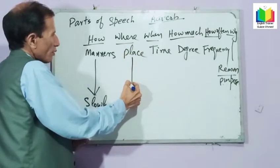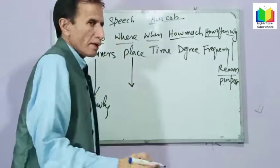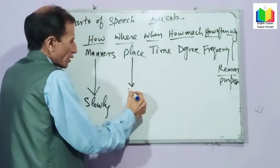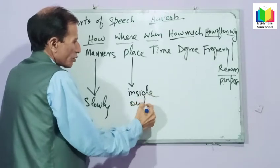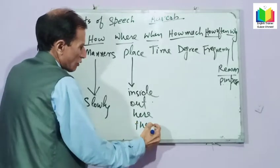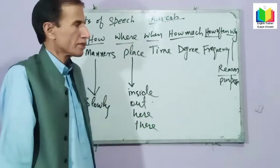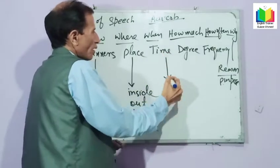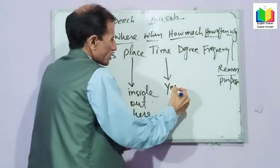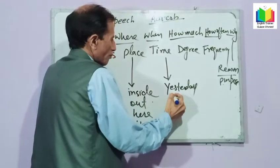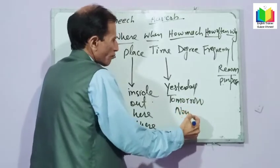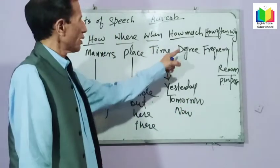Adverb of place tells us about place — for example: inside, out, here, there, everywhere. These come under adverb of place. And for time: yesterday, tomorrow, now — these come under adverb of time.